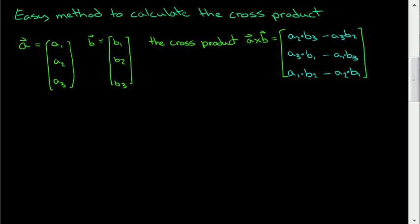For instance, if we have a vector a with a1, a2, and a3, and vector b with b1, b2, and b3, then the cross product a cross b is a2 b3 minus a3 b2. And how do you remember this? How can you remember this?